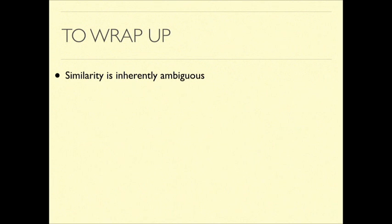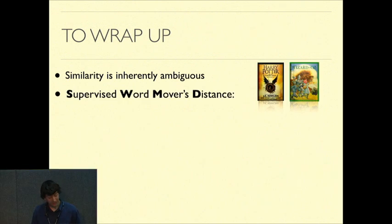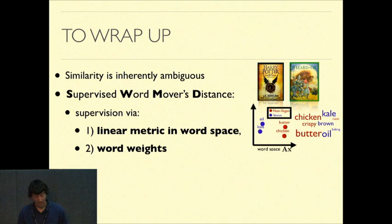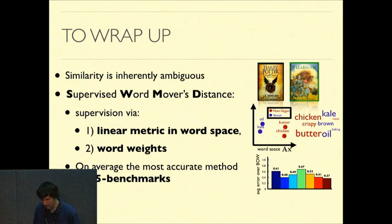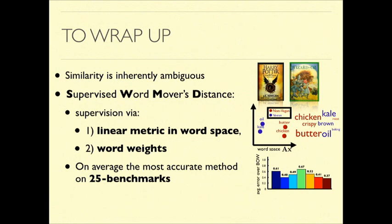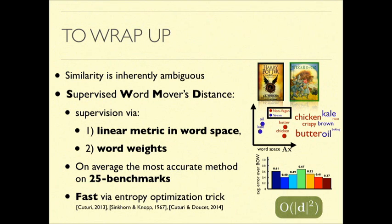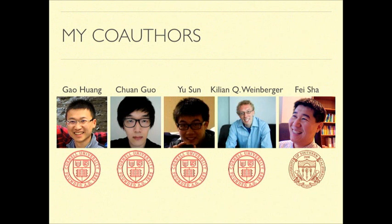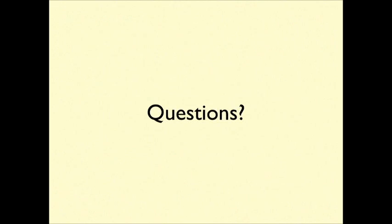So to wrap up, I wanted to point out that at the beginning of the talk, similarity is an inherently ambiguous concept. So to address this, we introduced the supervised word movers distance. And we supervised it by introducing a metric in word space, A, and some word importance weights, W. And what we showed is we were able to outperform 25 different benchmark methods on average across eight text classification data sets. And even more practically, we were able to make it fast via this nice trick to make it a quadratic optimization problem. So I'd like to thank my co-authors. And I'd like to thank you for listening if you have any questions.